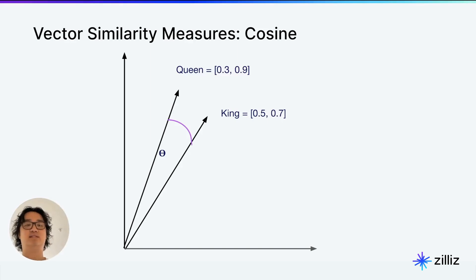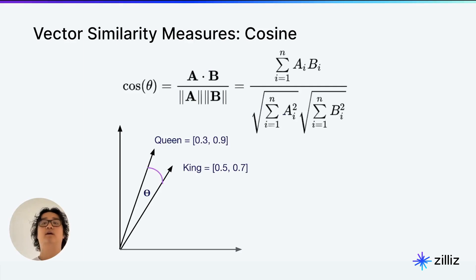Cosine similarity is the angle between two vectors, which I've marked here with this purple line. The way that cosine similarity is calculated looks pretty complicated, but what it really is in concept is the dot product or the inner product,